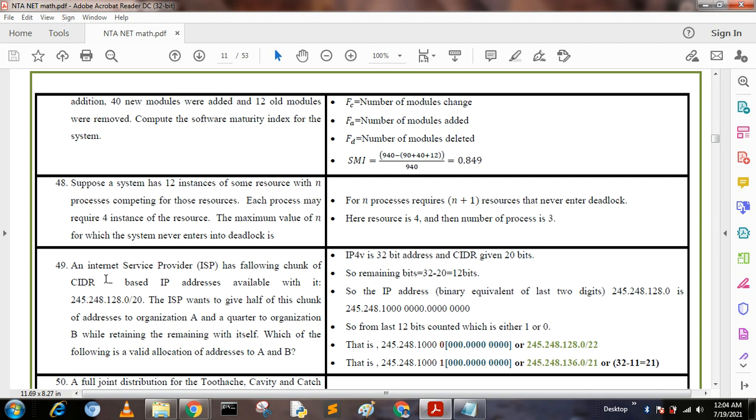Next question: An Internet service provider has the following chunk of CIDR-based IP address available: 245.248.120.0/20. The ISP wants to give half of this chunk of addresses to organization A, a quarter to organization B, while retaining the remaining addresses with itself. Which of the following is a valid allocation of addresses to A and B?